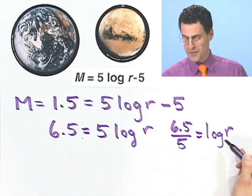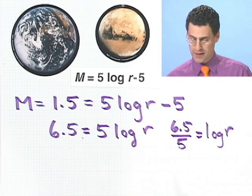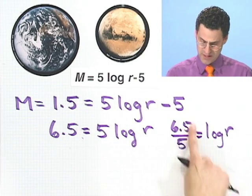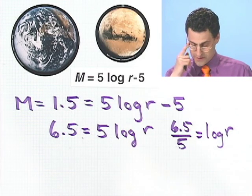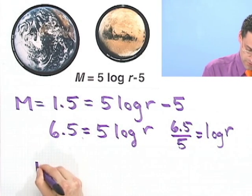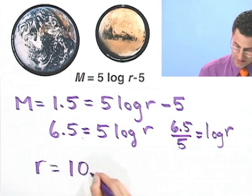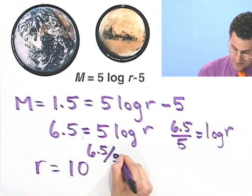Well, remember log with nothing there, a naked log, is log base 10. So I could convert this into the following. Log is the exponent. 10 to that exponent will equal r. And so what I have here is r equals 10 to that exponent, 6.5 divided by 5.